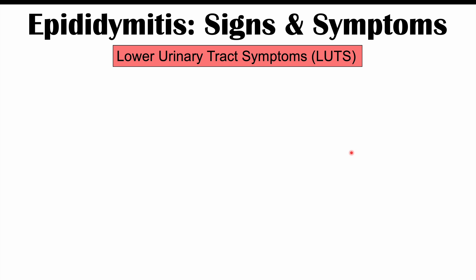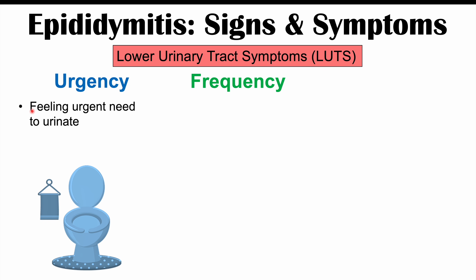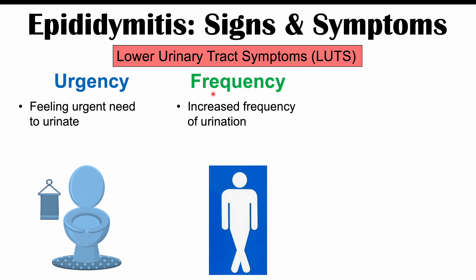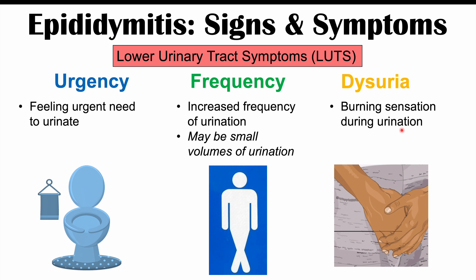It's also common for patients to have lower urinary tract symptoms, or LUTs. These can include urinary urgency — a feeling of urgently needing to urinate — as well as urinary frequency, where patients urinate so frequently that each urination produces only small volumes of urine, and they may still feel like they need to urinate even after fully emptying their bladder. Dysuria — a burning sensation during urination — can also occur. Although these symptoms are associated with urinary tract infections, they can also be seen in epididymitis.